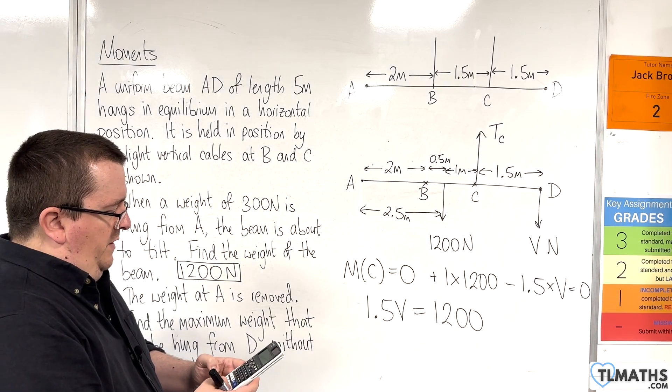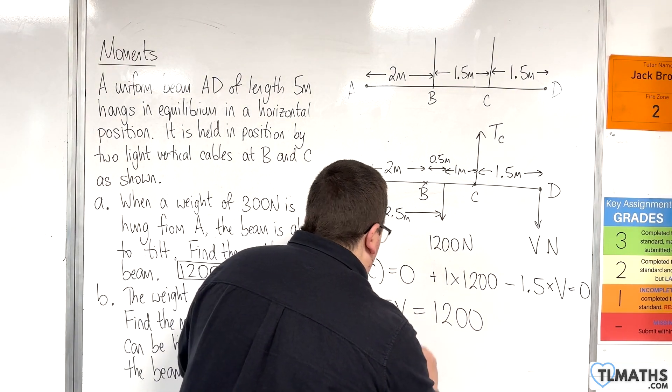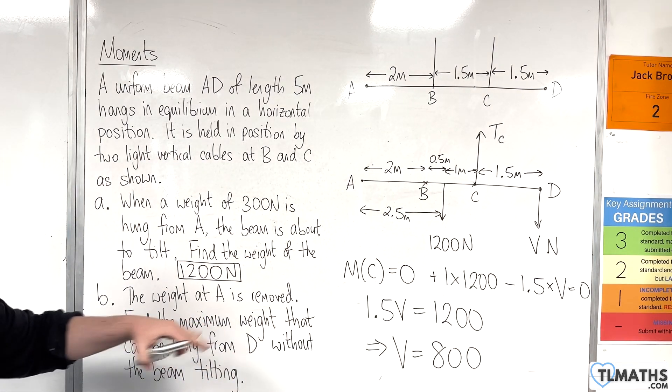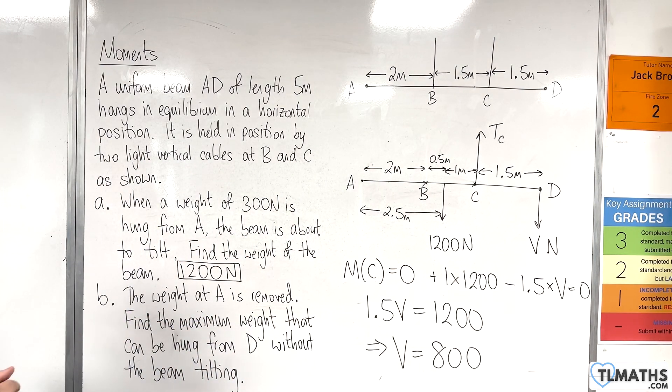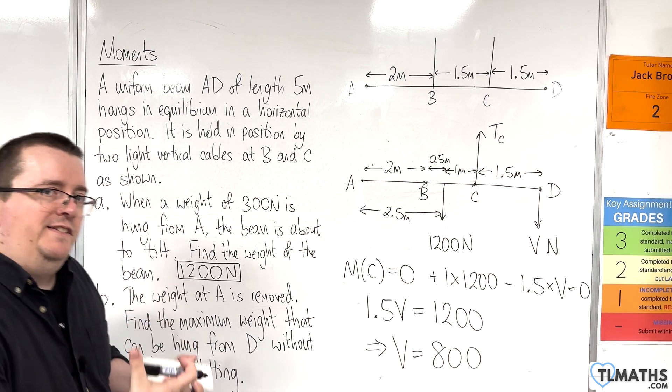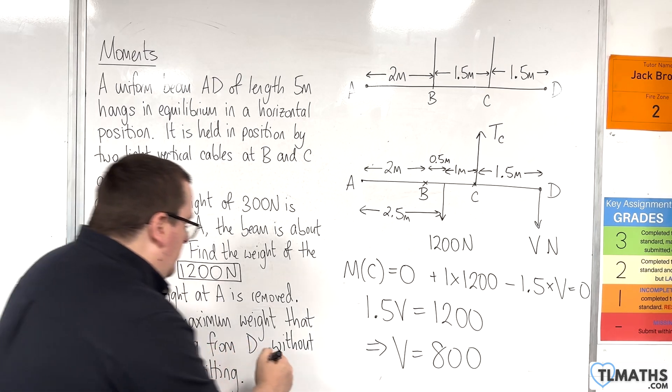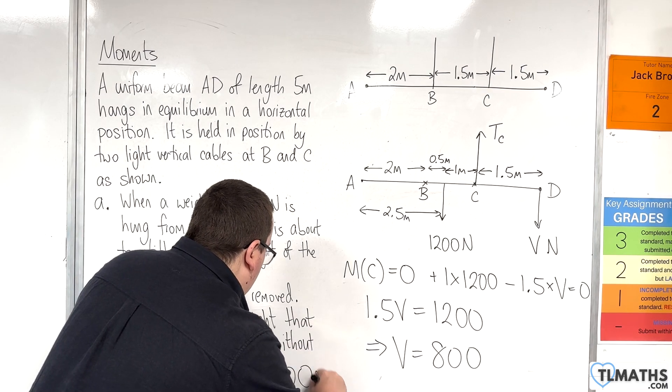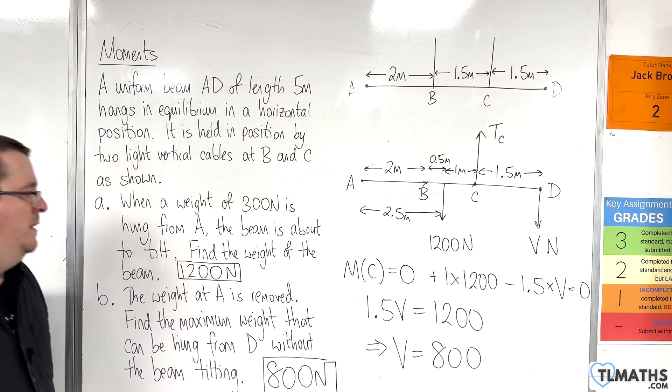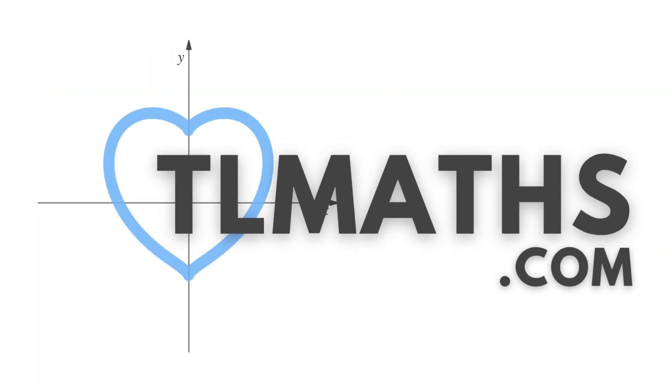So we have that 1.5V is equal to 1200. So 1200 divided by 1.5 is 800. So V is 800. So the maximum weight that could be hung from D without the beam tilting is 800 newtons. Okay. And so that's our answer. Thank you.